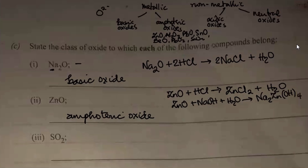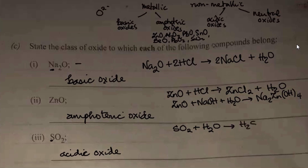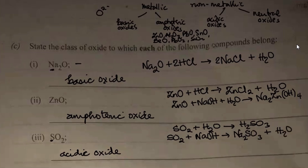Then, sulfur dioxide. Sulfur dioxide is a non-metallic oxide because sulfur is a non-metal. Being a non-metallic oxide, what type of oxide is it? It is an acidic oxide because this compound dissolves in water to form an acid. So this is an acidic oxide. It can react with sodium hydroxide to form a salt: SO2 + 2NaOH → Na2SO3 + H2O. It's balanced.